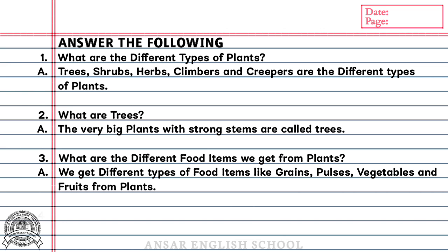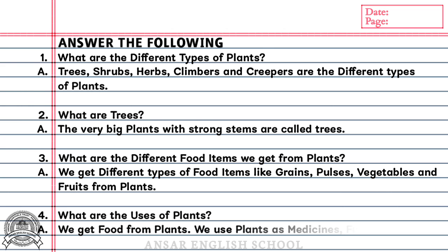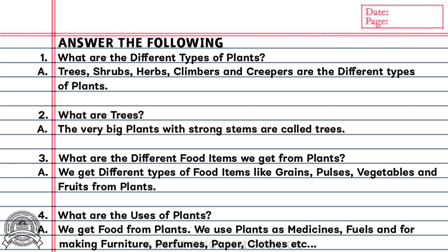Question number 4: What are the uses of plants? Answer: We get food from plants. We use plants as medicines, fuels and for making furniture, perfumes, paper, clothes etc.